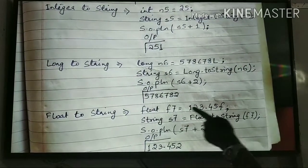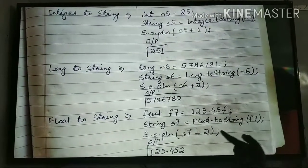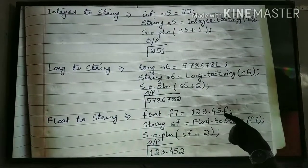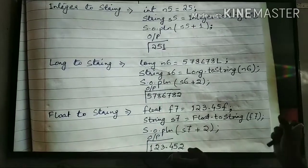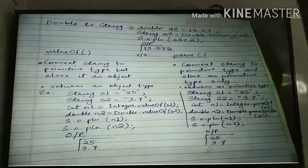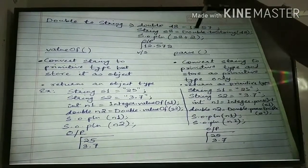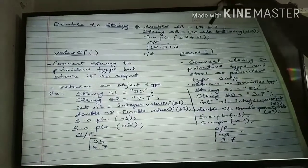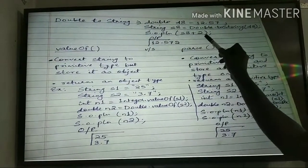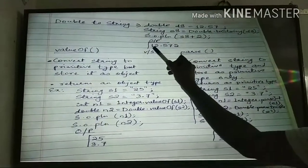For float to string: float f7 = 123.45. The method is Float.toString(f7) — float wrapper class, method is toString, it converts it into string. So s7 will have the string value, and s7 plus 2 means concatenation, giving 123.452. Then double to string: double d8 = 12.57. String s8 = Double.toString(d8) — wrapper class Double, method toString converts the double value to string. So s8 plus 2 gives 12.572 by concatenation.